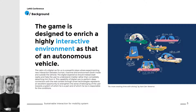So we intended to design a game. The game is designed to reach a highly interactive environment such as that of an autonomous vehicle. We consider the cabin of a digital car as a powerful place for experimenting with new interactions between human, machine, and environment — both inside and outside the vehicle. The capability of the digital car to perform deep connections with the real context through smart technology represents an excellent opportunity to strengthen the user's sense of belonging toward a system of which they are a part and for whose conditions they are responsible.